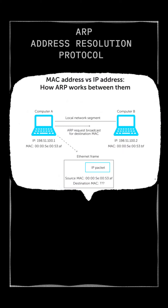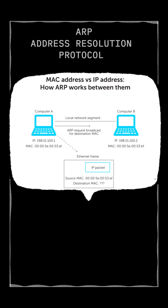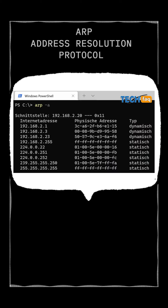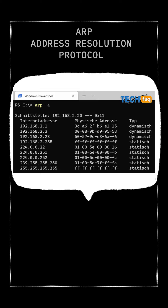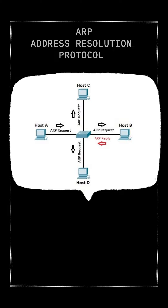ARP Request: When a device wants to send data to another device on the same network, it first checks its ARP cache — a temporary table of IP-to-MAC address mappings. If the MAC address is not found, the device broadcasts an ARP request to all devices on the network, asking: "Who has IP address X?"